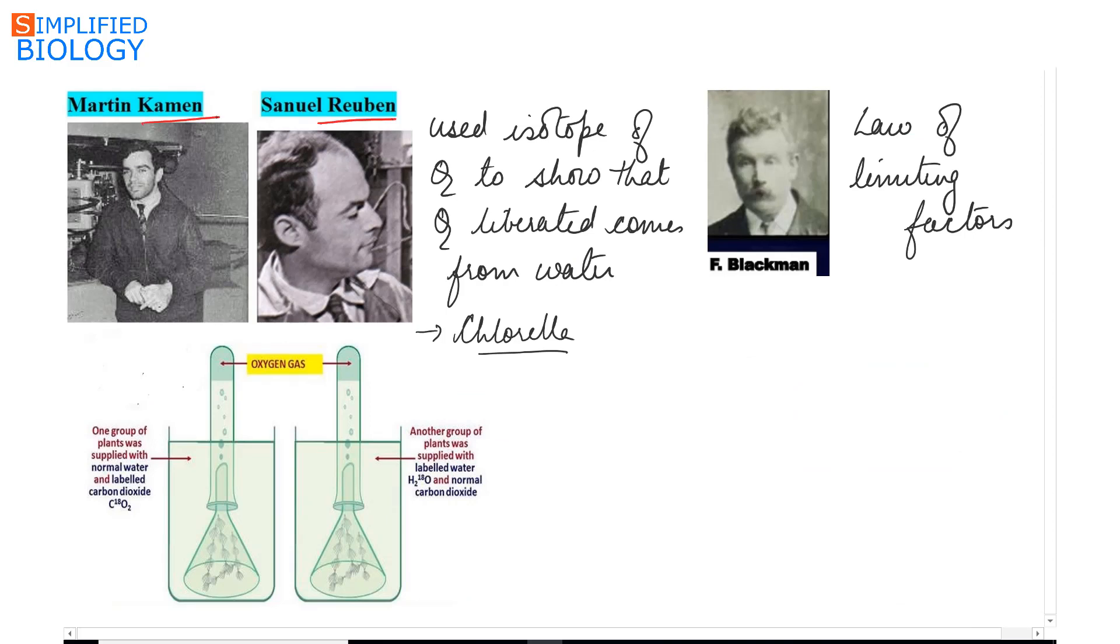Ruben and Kamen used a heavy isotope of oxygen to show that oxygen liberated during photosynthesis comes from water. For this they used the green algae Chlorella. On one side they provided the green algae Chlorella with carbon dioxide having the heavy isotope of oxygen, and on the other side they provided water having the heavy isotope of oxygen. The oxygen bubbles that were released, when they were checked, the heavy isotope of oxygen was found in case of the Chlorella cells that were provided with water having the heavy isotope of oxygen.